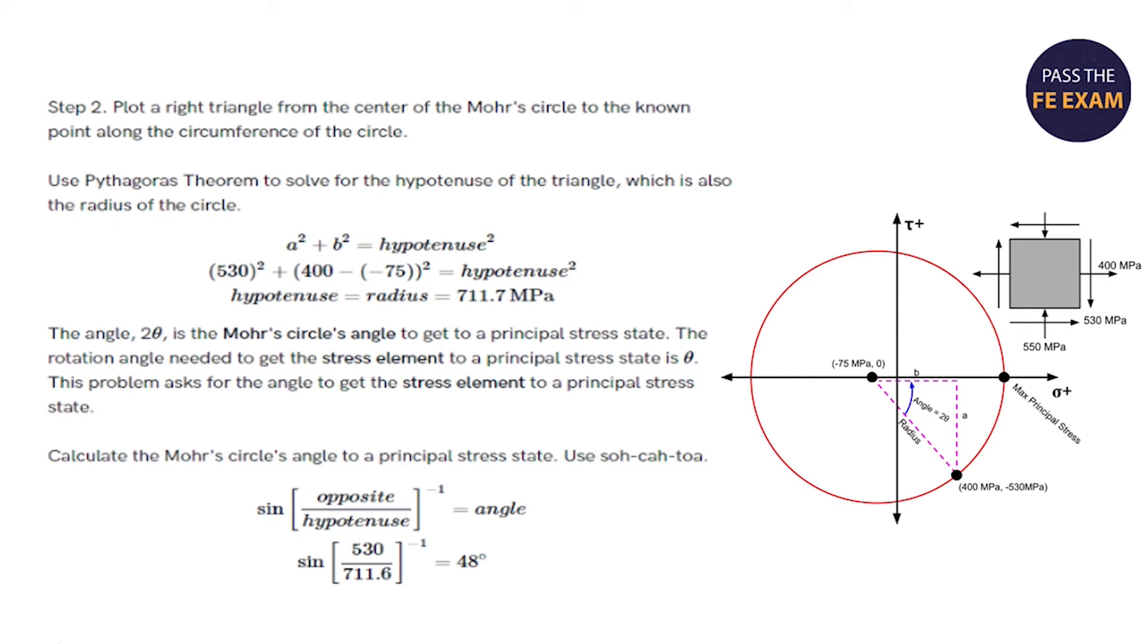Step two, plot a right triangle from the center of the Mohr's circle to the known point along the circumference of the circle, which you can see right here in the pink dashed line. You connected the dots that I've just explained to you, and you made it a right triangle. You can then use Pythagorean theorem to solve for the hypotenuse of the triangle, which is also the radius of the circle, which you can see right here. Using Pythagorean theorem, you can determine the hypotenuse, which is the radius, to be 711.7 megapascals.